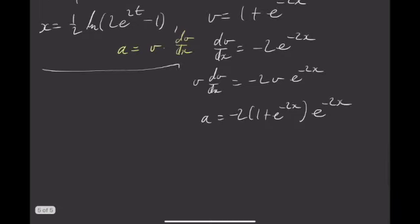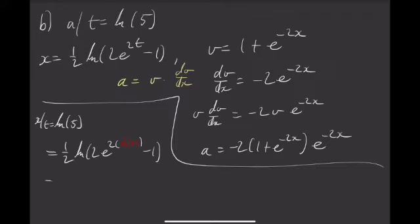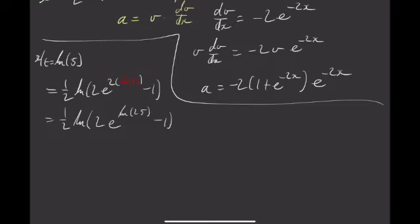So first thing I'm going to need to do using my method is find x given t equals natural log of 5. And that I can do pretty quickly. x given t equals natural log of 5 is 1 half natural log 2e to the 2. And that t becomes natural log of 5 minus 1. So this gives me 1 half natural log of 2e to the natural log of 25 minus 1 using log laws. My e cancels my natural log. So I get 1 over 2 natural log of 50 minus 1. Skip to the end, that is natural log of 7.